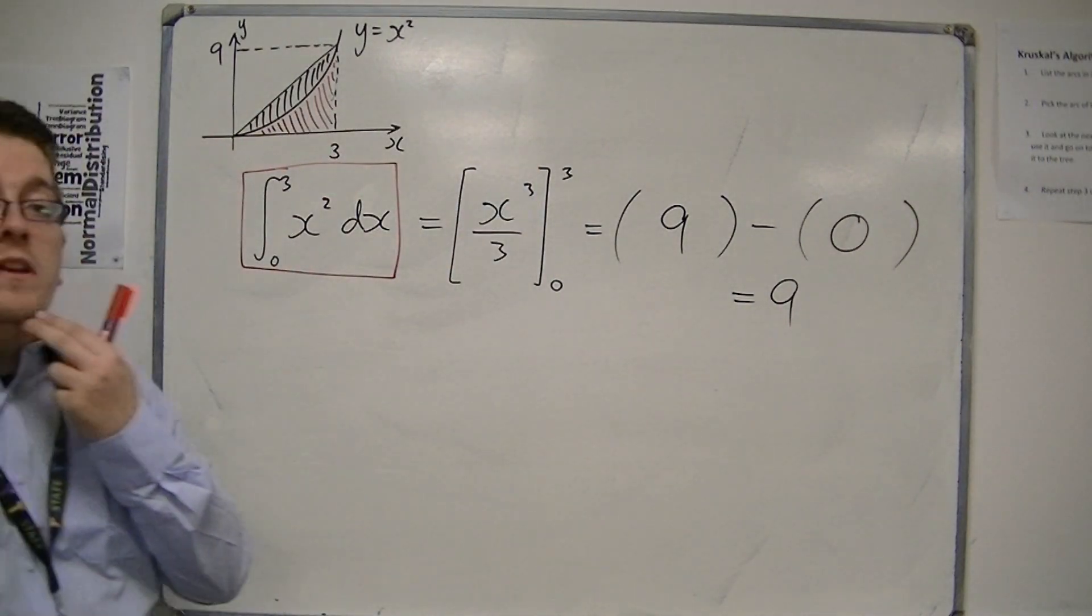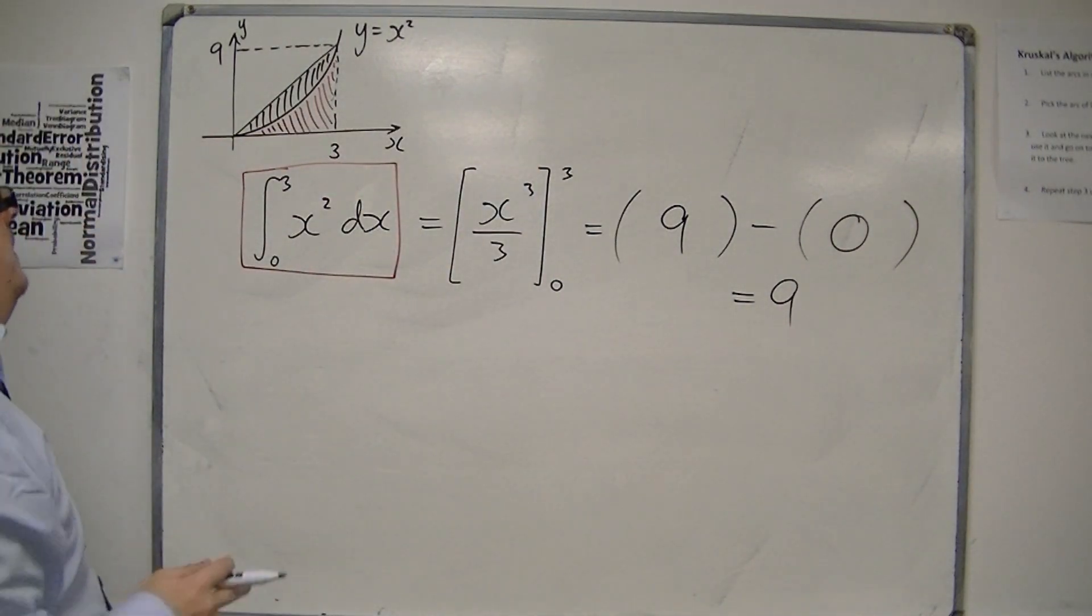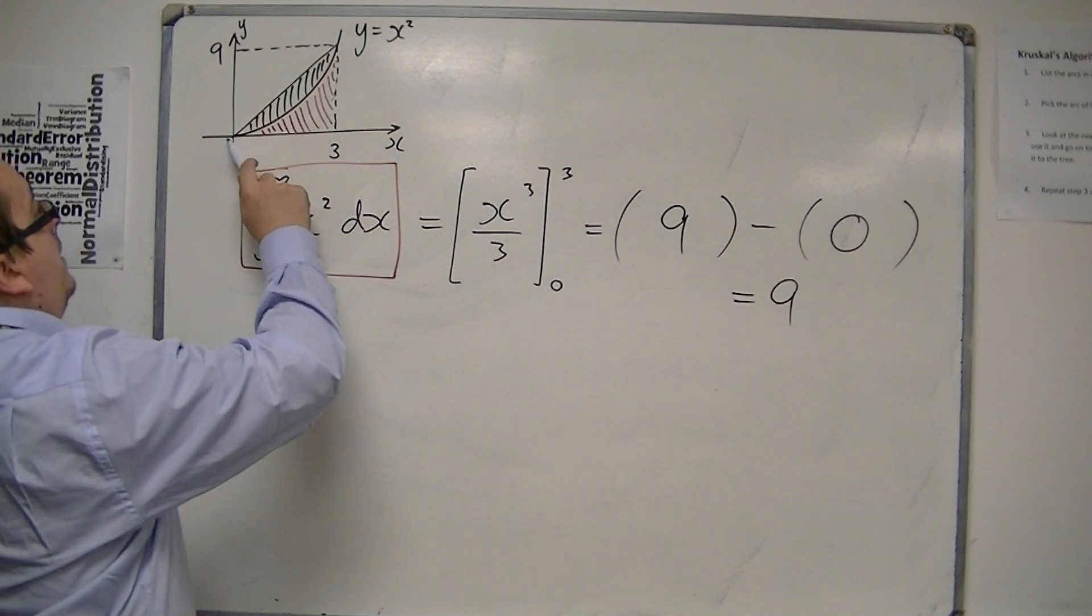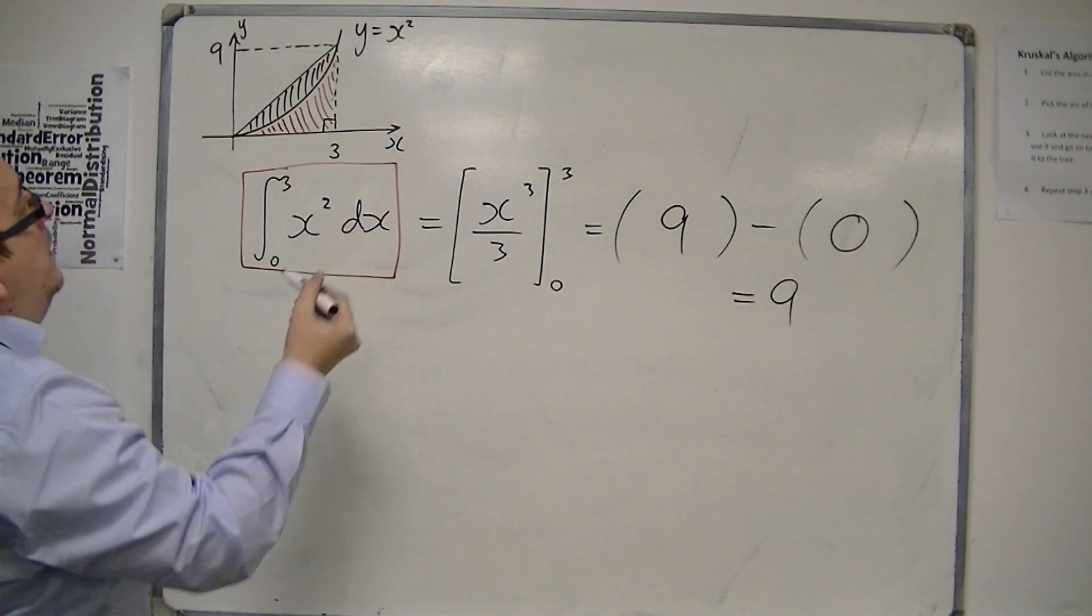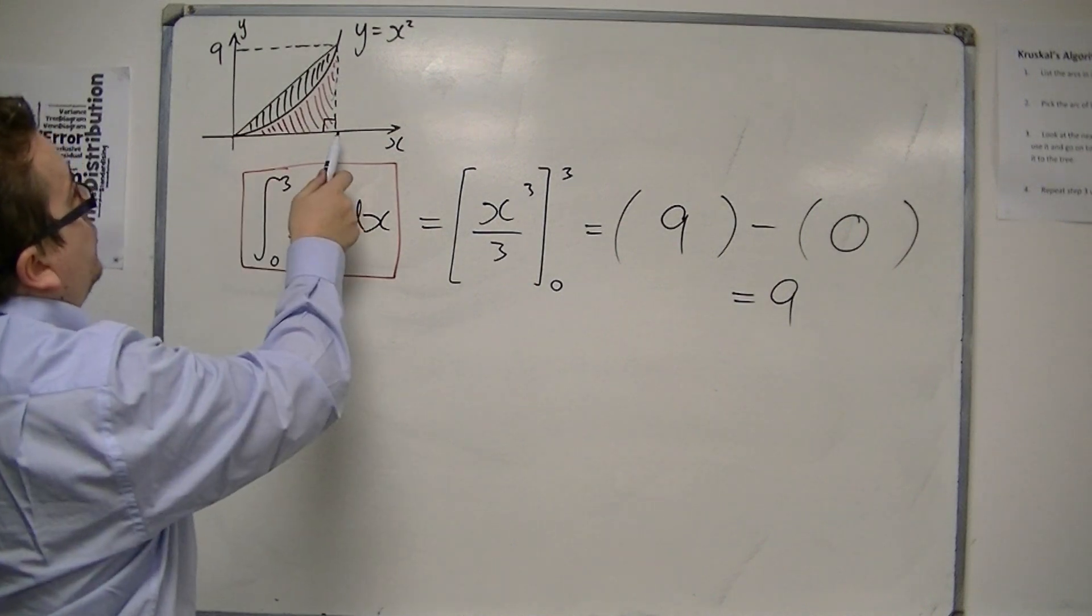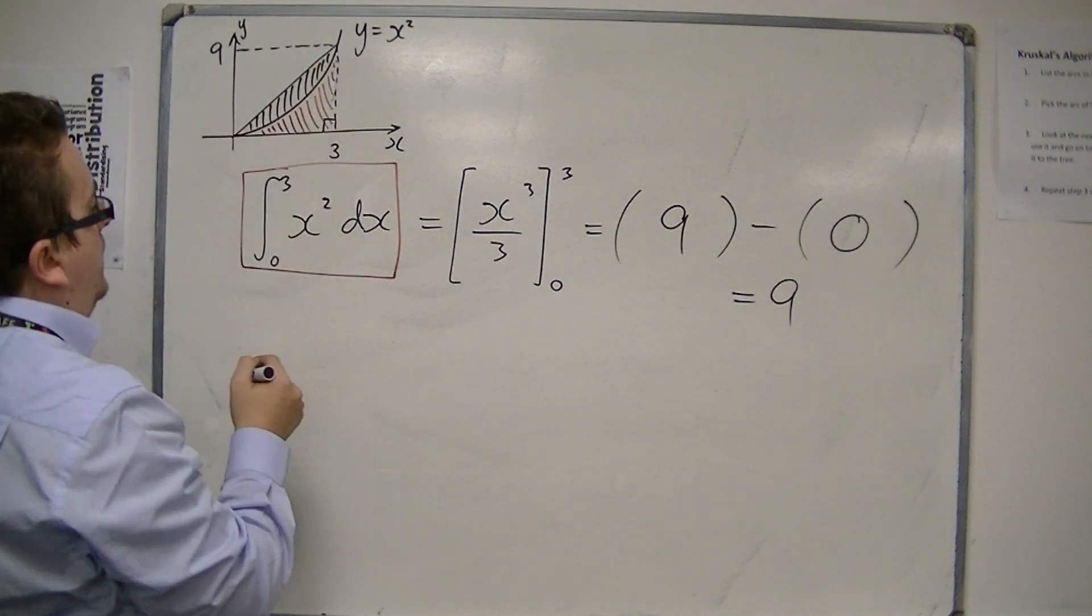So, the area, the red shaded area, is 9. Now, what I also have here is a right-angled triangle, and I know that the base is 3 and the height is 9.